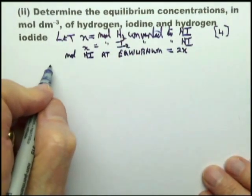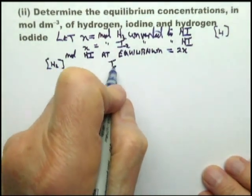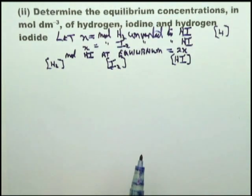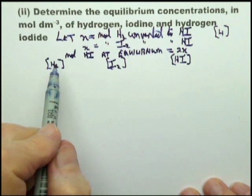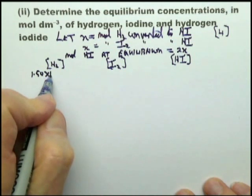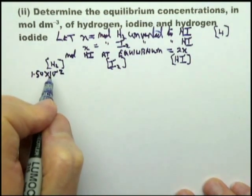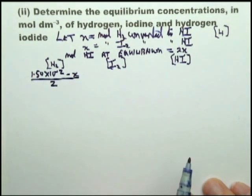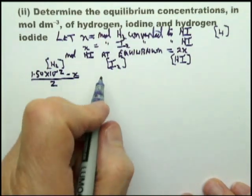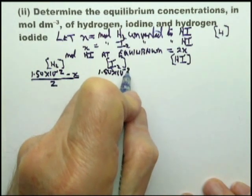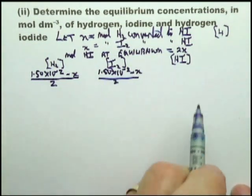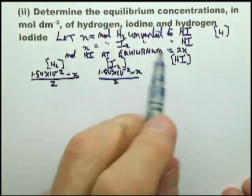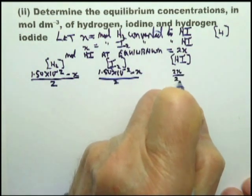We know the volume - they tell us the volume is 2. So we find, what is the number of moles of H2 at equilibrium? Well, we started off with 1.5 × 10⁻². Of that, x moles was converted to HI. So there now remains 1.5 × 10⁻² minus x. Volume is 2, so that is now the concentration. Fortunately for us, the concentration of I2 is the same: 1.5 × 10⁻² minus x over 2. When it comes to the HI, we know that at equilibrium there's 2x moles. The volume is 2. Therefore the concentration is x.